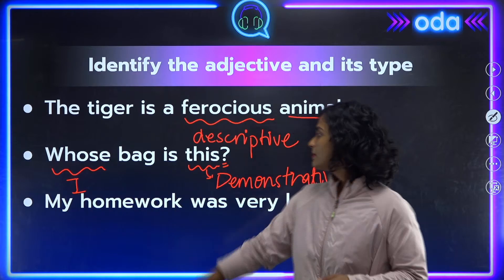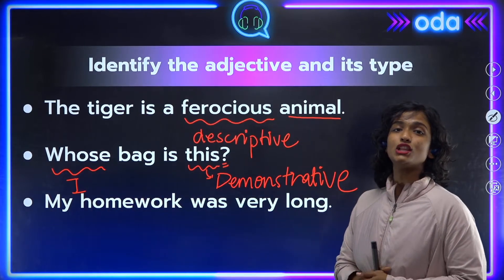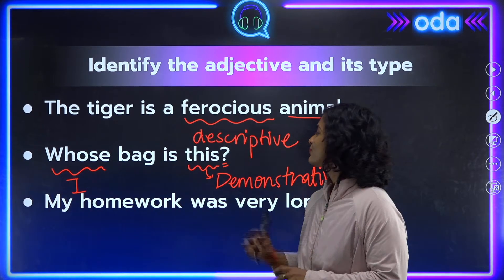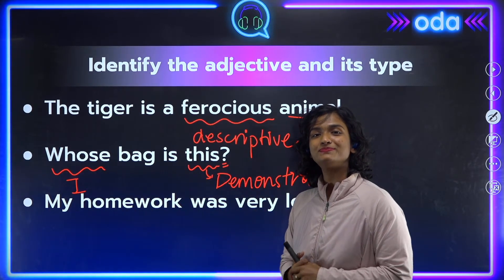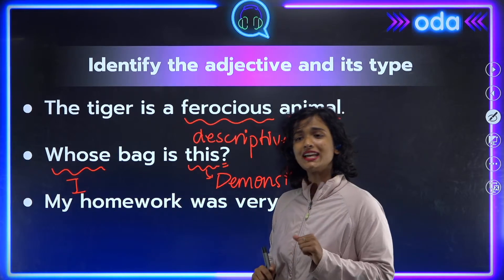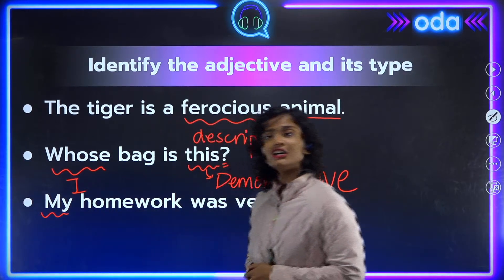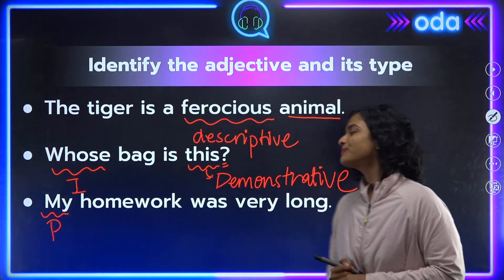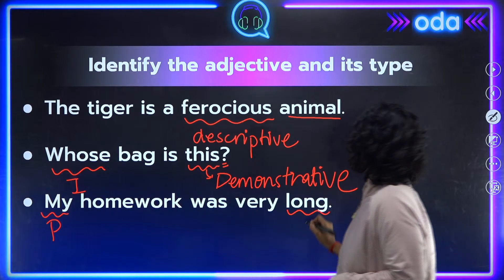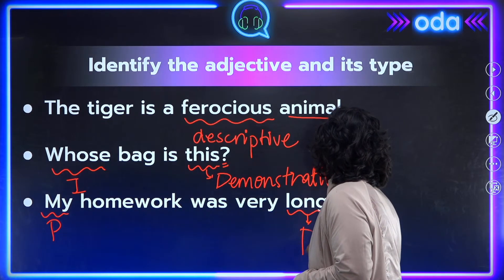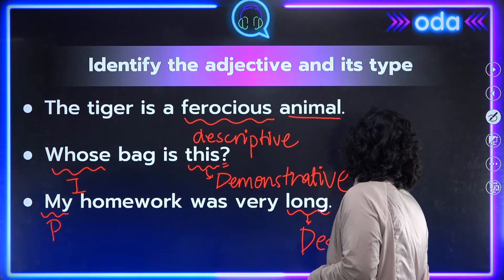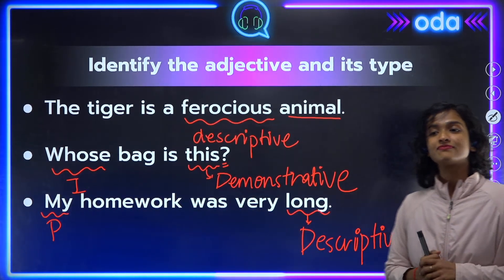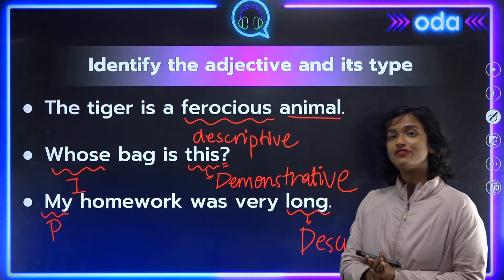Our last example: 'My homework was very long.' Here we have two adjectives. First is 'my,' which is a possessive adjective. Second is 'long,' which is a descriptive adjective — it tells us what kind of homework we had. Remember, we have covered five types of adjectives today.